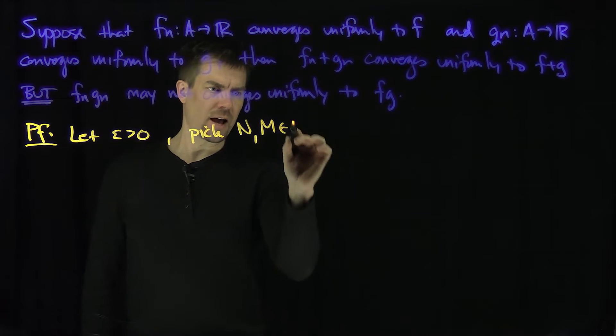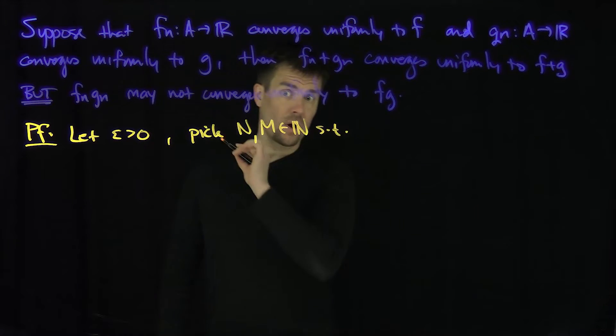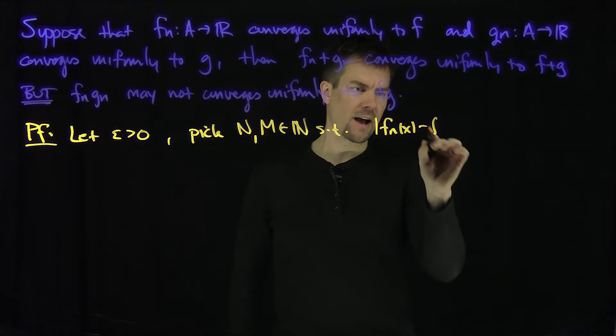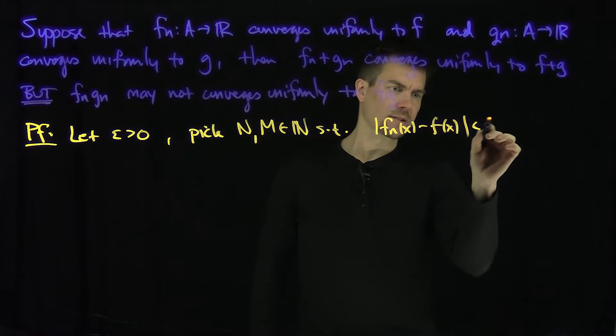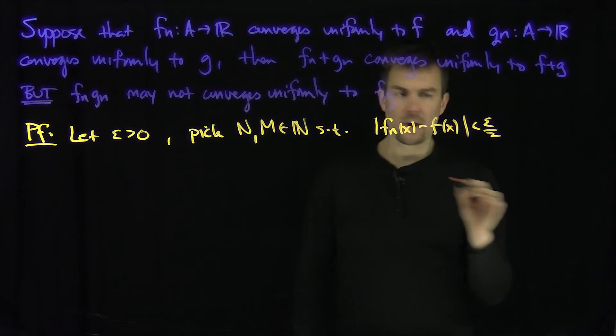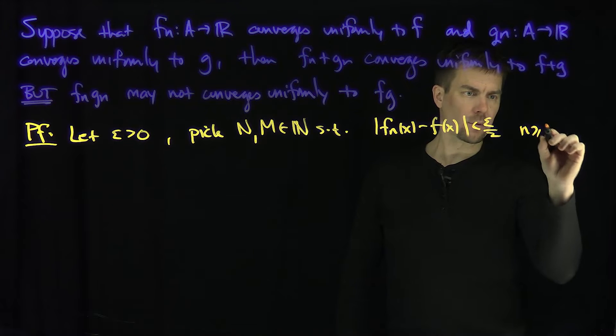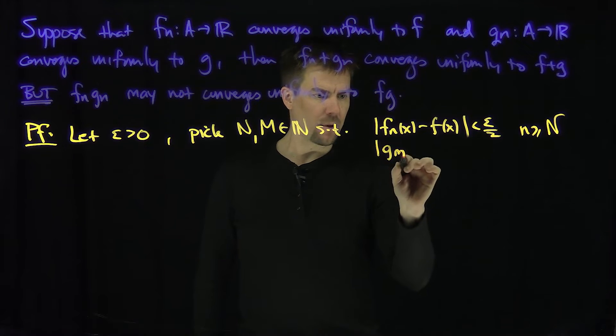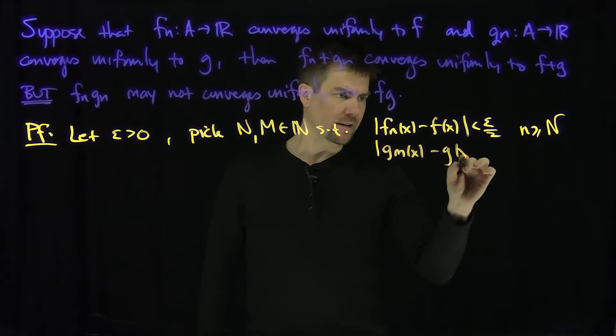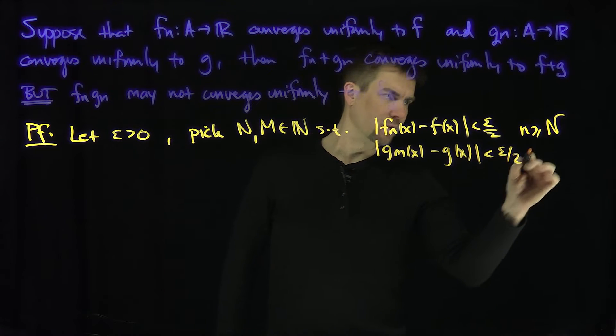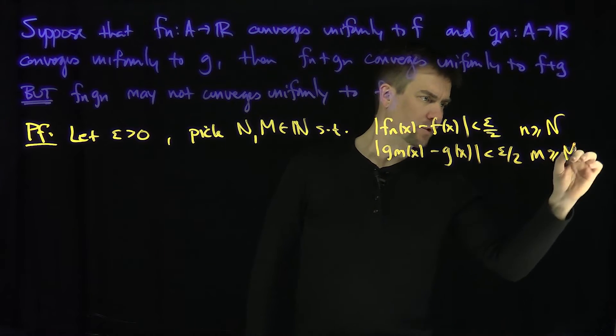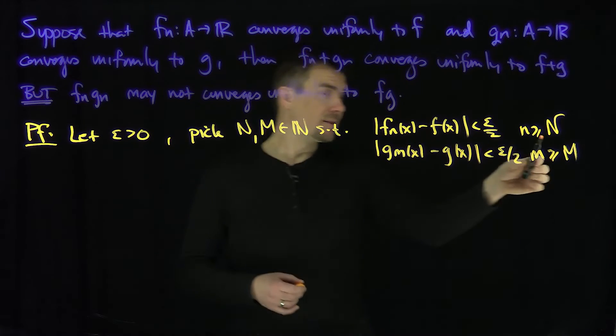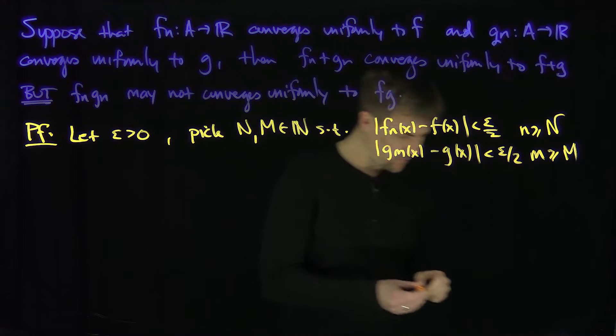Such that |Fn(x) - F(x)| is less than epsilon over 2 for n greater than or equal to N, and |Gm(x) - G(x)| less than epsilon over 2 for M greater than or equal to M. Now we do the classic trick: we let N tilde be the maximum of those two so both estimates are true.